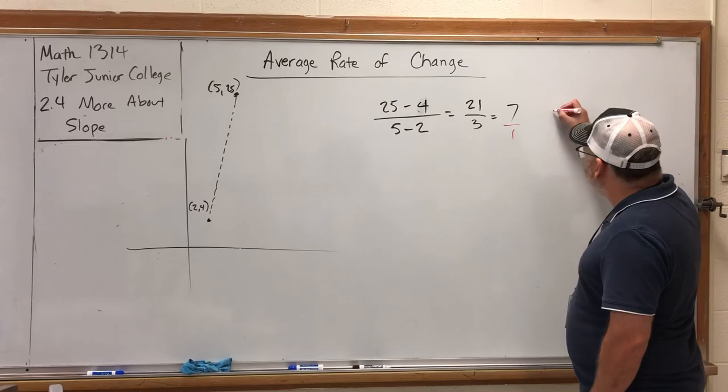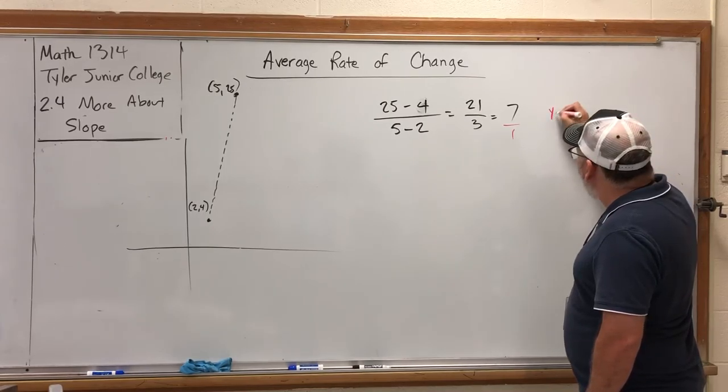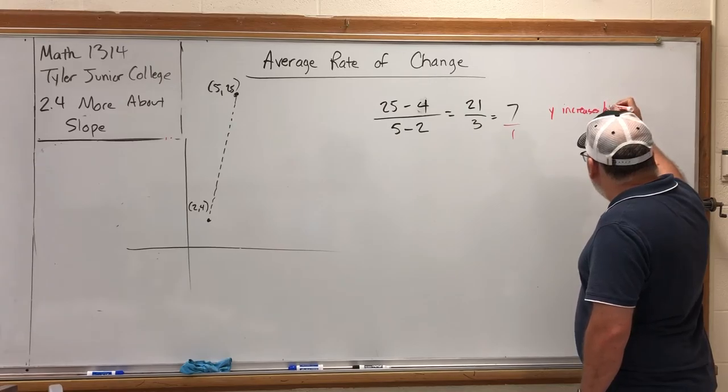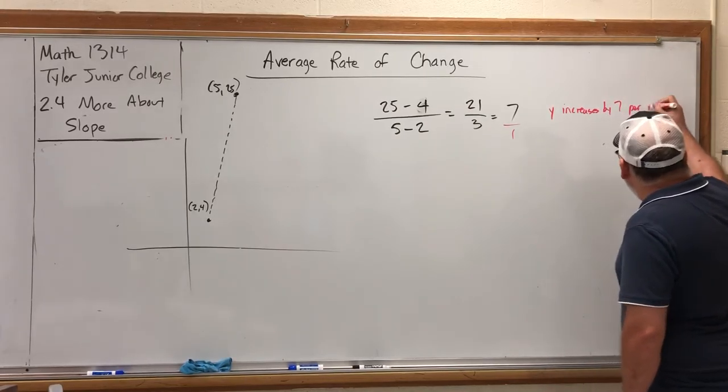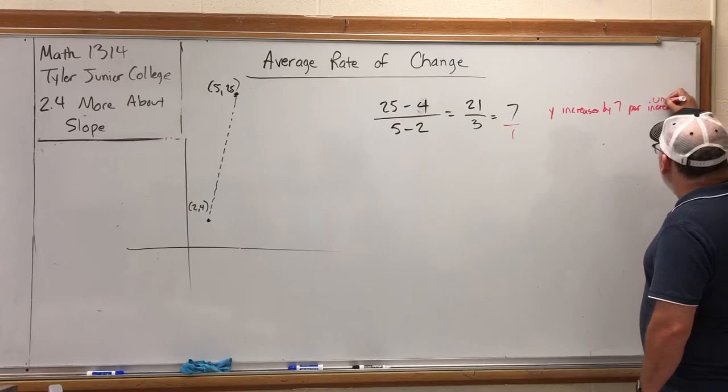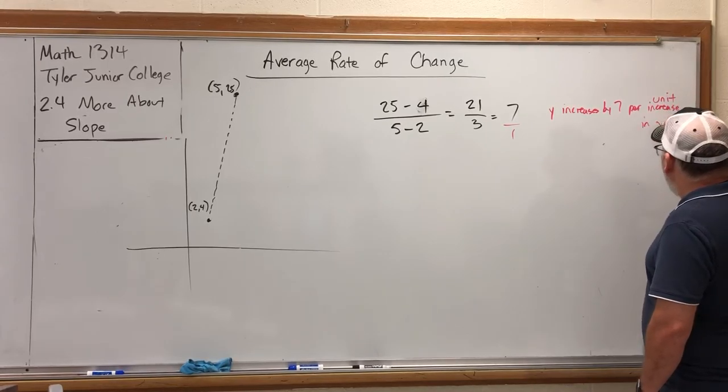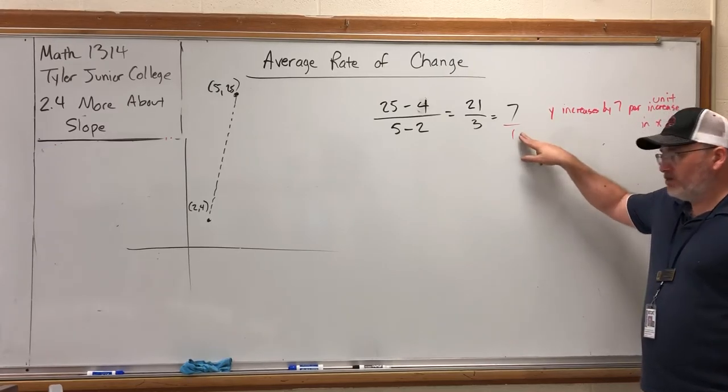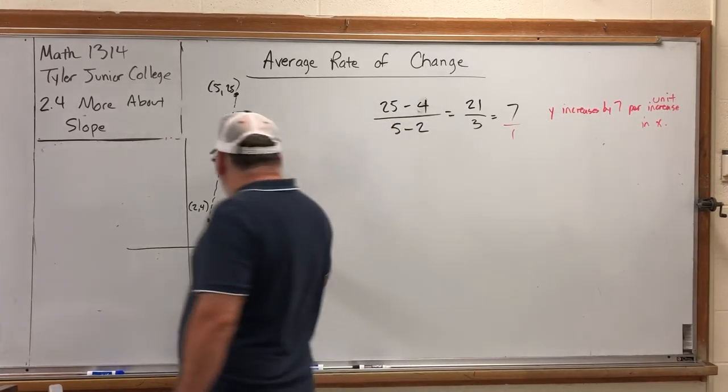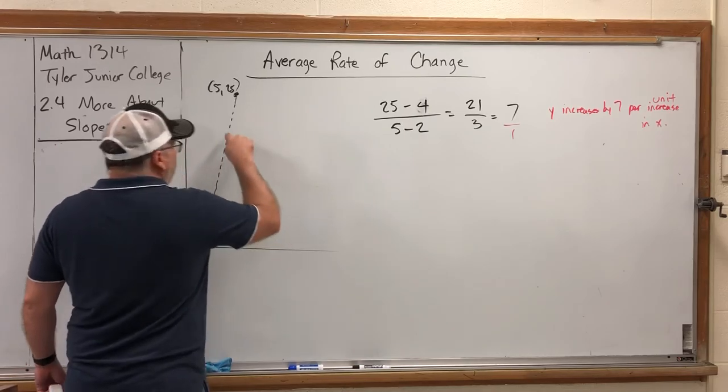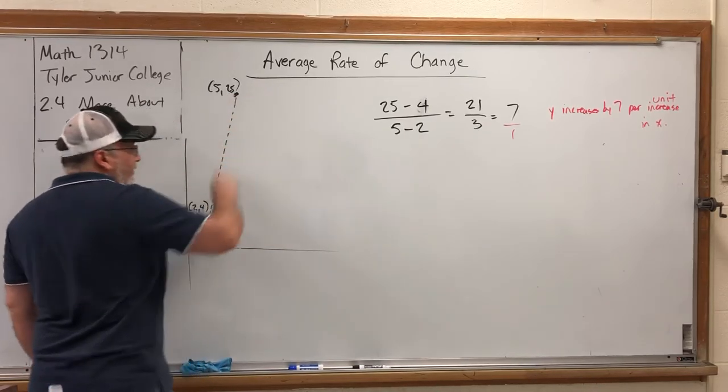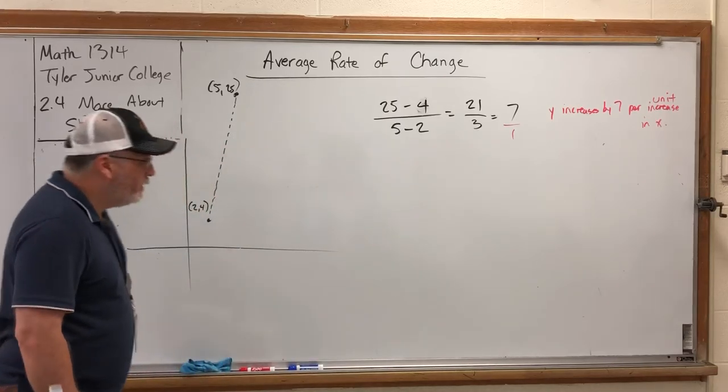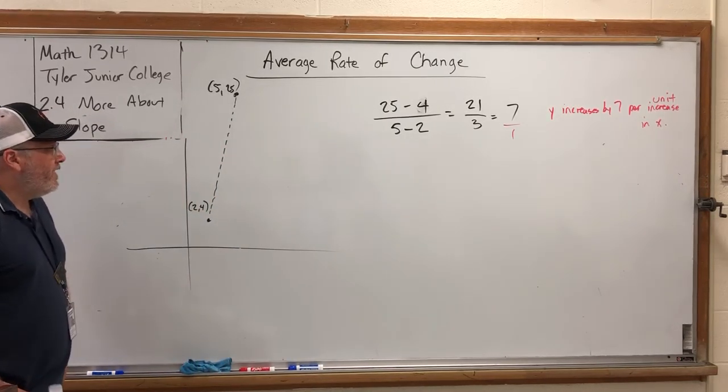If we interpret that as 7 over 1, it means that y increases by 7 per unit increase in x. The x increases by 1, rise over run, y goes up 7. Over 1, up 7. That's all slope really is.